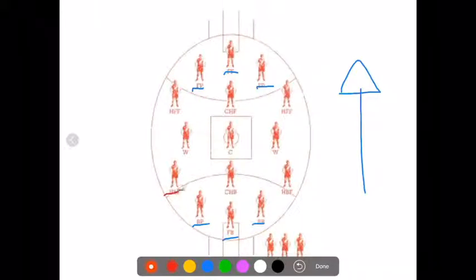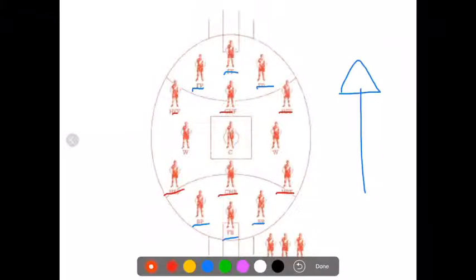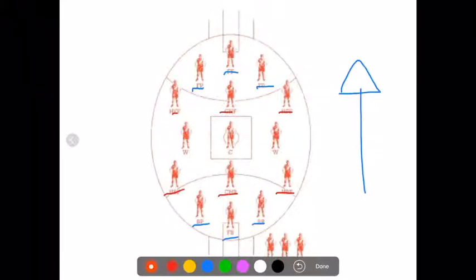Next we move on to the half back flank and the centre half back who match up on the half forward flank and the centre half forward and the other half forward flank. These people will match up against each other and that's where they'll play. Centre half forwards are usually trying to kick goals or trying to pass it off to one of the forward pockets to kick goals. Also like the back pockets are trying to stop them kicking goals.